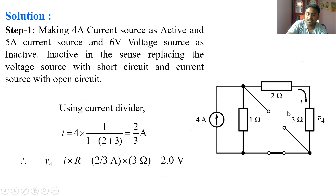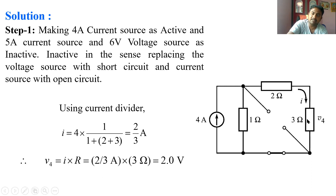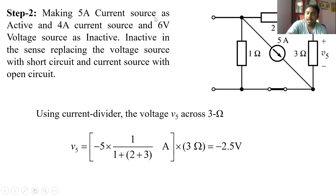With the 4 A source active, the total current divides and I apply the current division rule to find the branch current through the 3 Ω resistor: I = 4 × (opposite branch 1 Ω) / (1 + 2 + 3). The current entering the positive terminal gives a positive voltage. Multiplying this current by 3 Ω, the voltage across the 3 Ω resistor in Step 1 is V1 = (2/3) × 3 = 2 V.